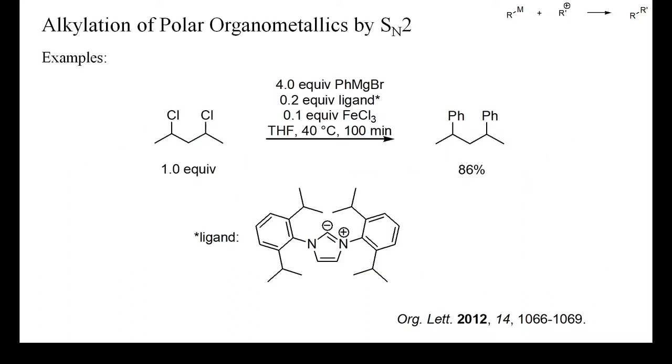In this example, a rather unreactive dichloride was used to alkylate phenylmagnesium bromide. Secondary halides readily undergo elimination in the presence of bases and are therefore less effective alkylating reagents than primary halides. But in this case, with the aid of an iron-carbene complex, the alkylation proceeded as expected.